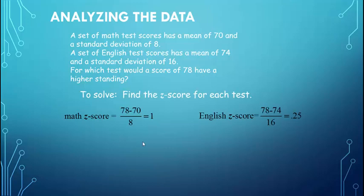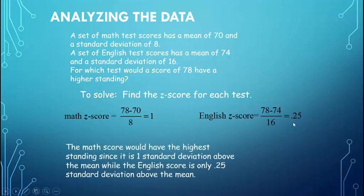Then we would solve for the z-score for each test. So the math z-score was 78 minus 70 over the standard deviation of 8, which is a z-score of 1. For English, your score was still 78 minus the mean of 74 over the standard deviation of 16, which is a z-score of positive 0.25. So which of these tests should you be happier about, your score? Well, what is a z-score of 1? In this case, you scored one standard deviation above the mean. For the English test, you scored 0.25 standard deviations above the mean. So in each case, you scored above the mean. But you should be happier with your math test because you were a whole standard deviation above the mean. Versus English, you were only a quarter of a standard deviation above the mean.